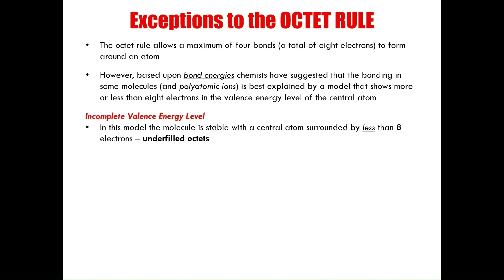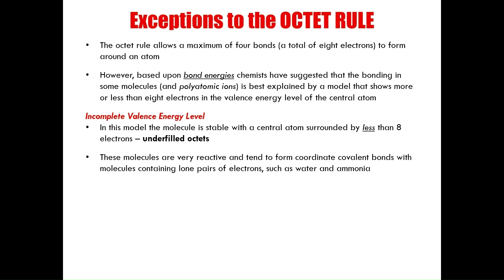An incomplete valence energy level, otherwise known as an underfilled octet, has less than eight electrons around the central atom, providing the molecule with stability. These molecules are very reactive and tend to form coordinate covalent bonds with molecules containing lone pairs, such as water and ammonia. An example is boron trifluoride, where boron only has six electrons surrounding it — different from the octet rule.